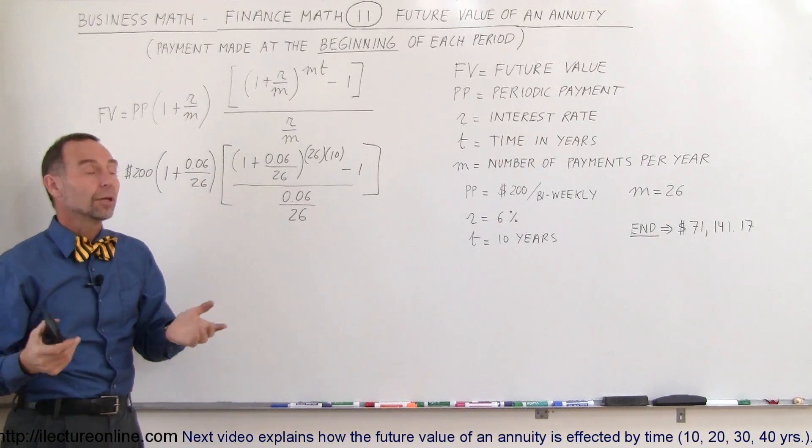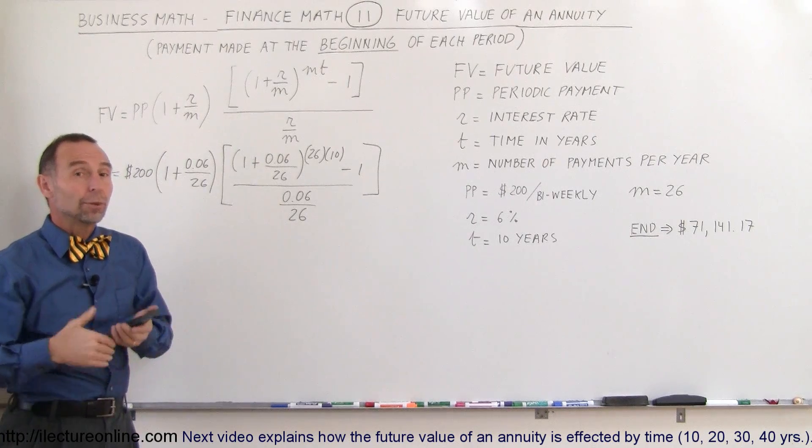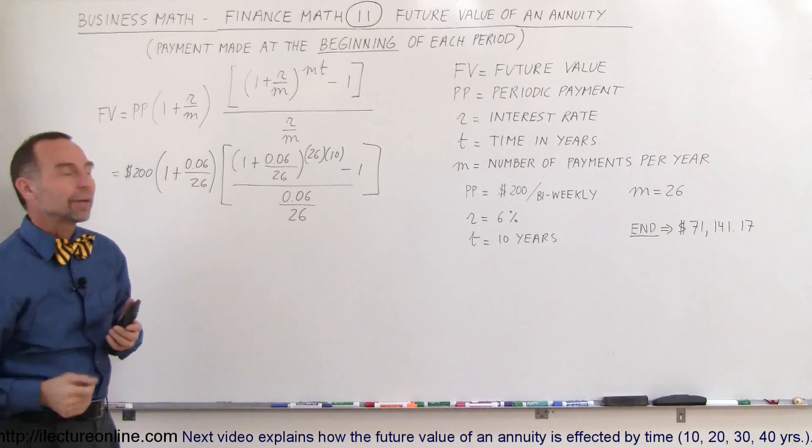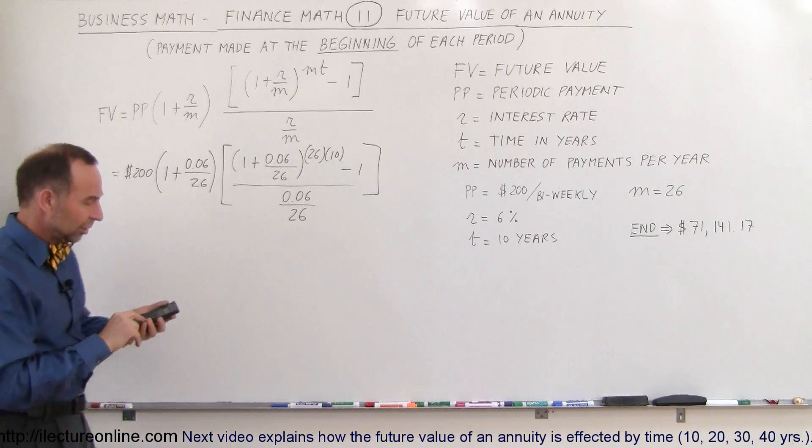End of the period is typically more common. But sometimes people open up an annuity and they want to start making their first payment right there. And then the next payments will be coming out of their paycheck.